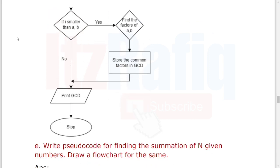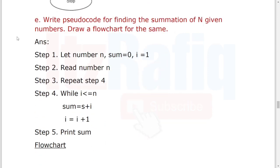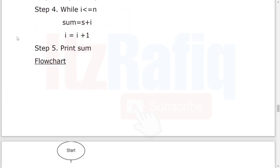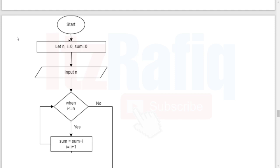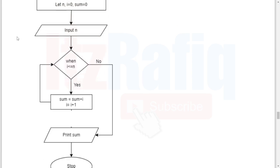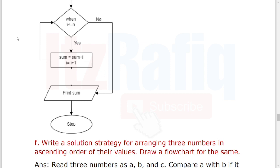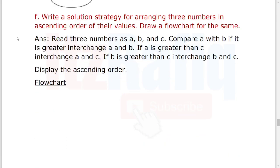Then number E: Write a pseudocode to find the summation of n given numbers and draw a flowchart for it. The pseudocode is this one. The flowchart will be this: Start, let n, i equal 0, sum equal 0, input n. When i less than or equal to n, if yes, sum equals sum plus i, i equals i plus 1. If no, print sum, then program stop.